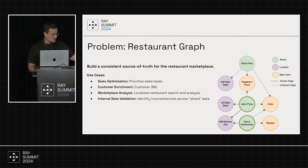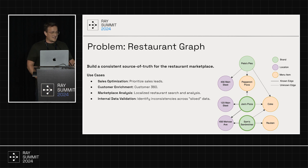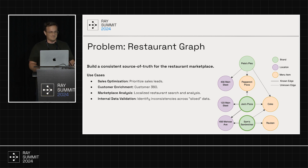This is just a toy example of entities we work with: brands, locations, menu items — obviously there's a lot more to it. Some of the edges we know really well from our internal data. Some we don't know and need to infer.